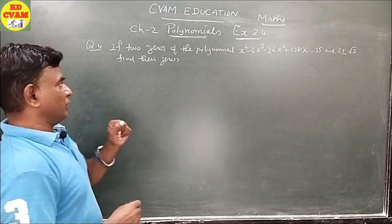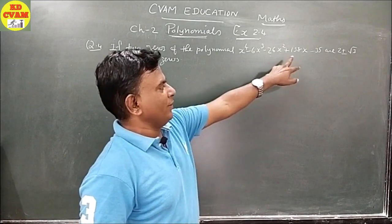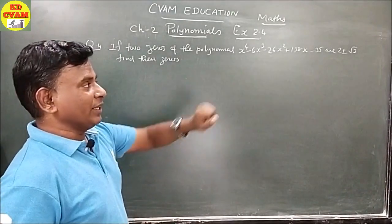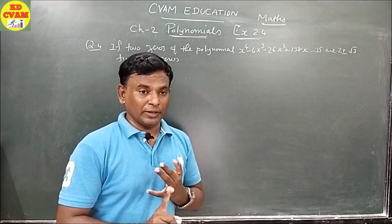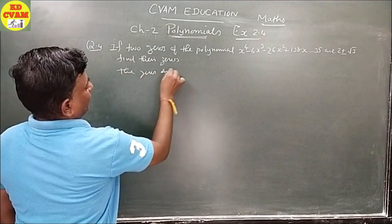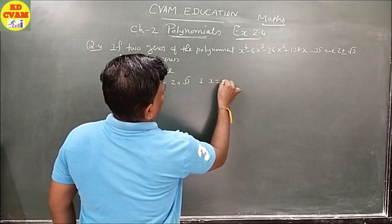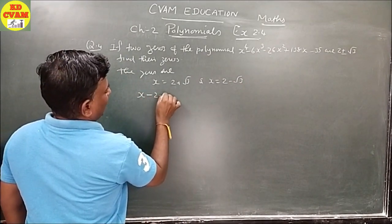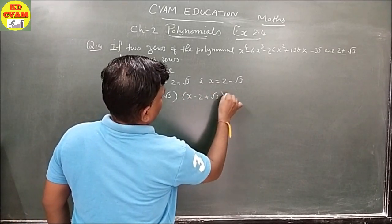Question number 4: if two zeros of the polynomial x⁴ - 6x³ - 26x² + 138x - 35 are 2 ± √3, find the other zeros. The zeros are x = 2 + √3 and x = 2 - √3, so the factors are (x - 2 - √3) and (x - 2 + √3).